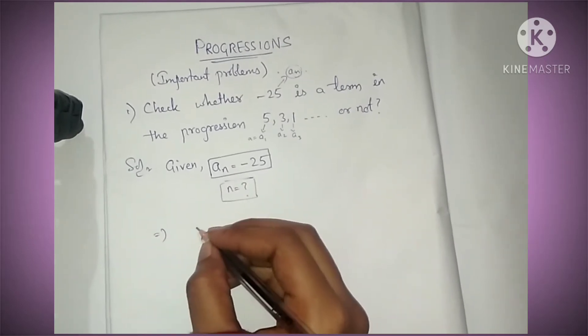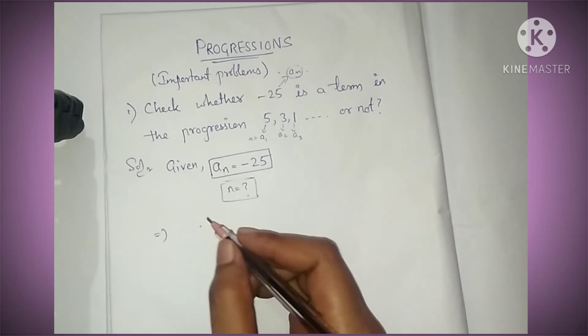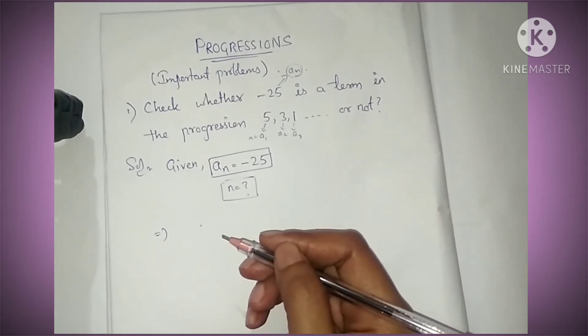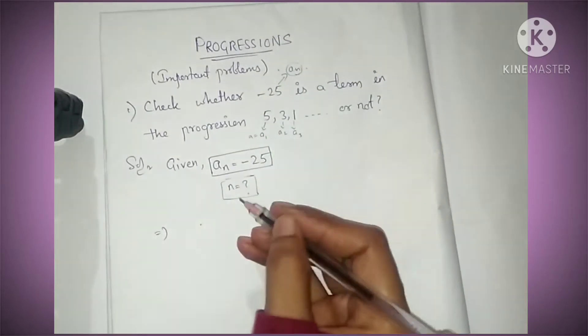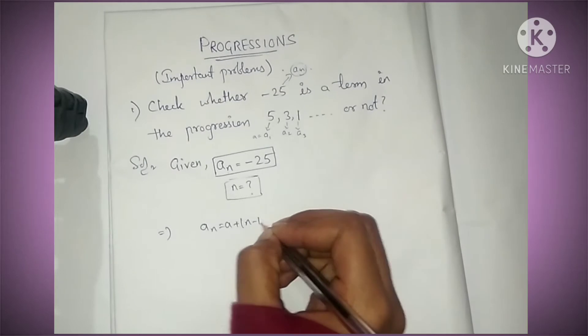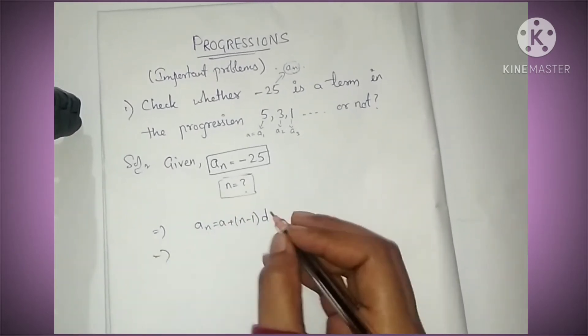You can check the formulas and introduction for progressions in the description where the link is mentioned. Here the formula is an = a + (n-1)d. We are using the nth term formula over here.